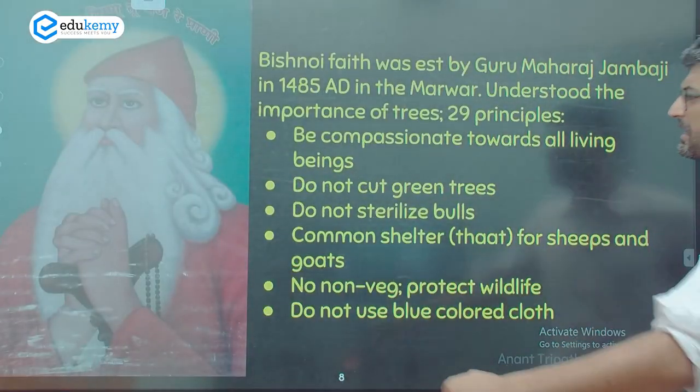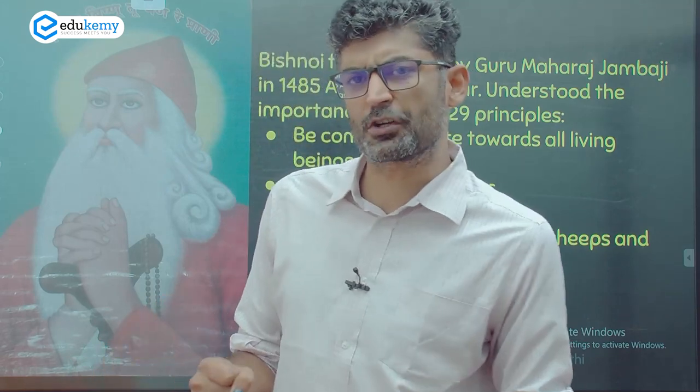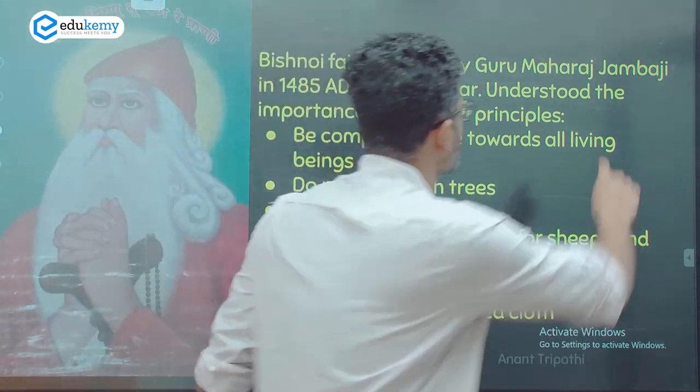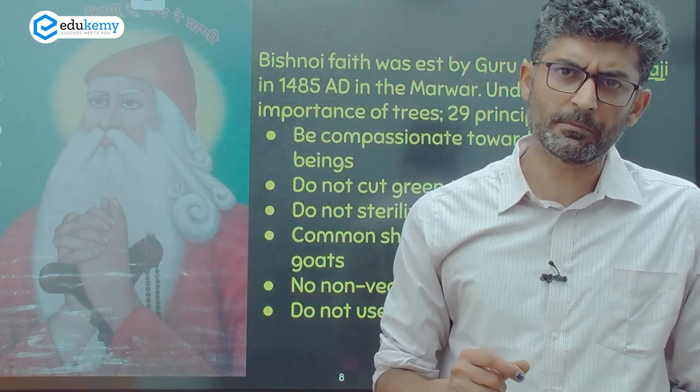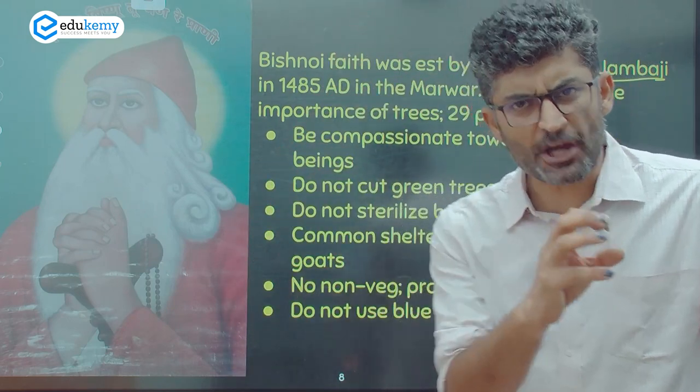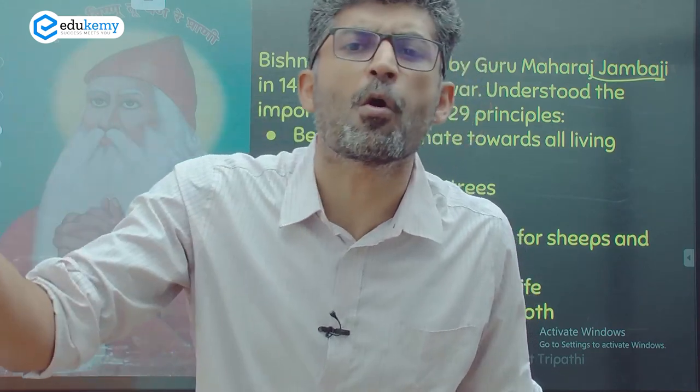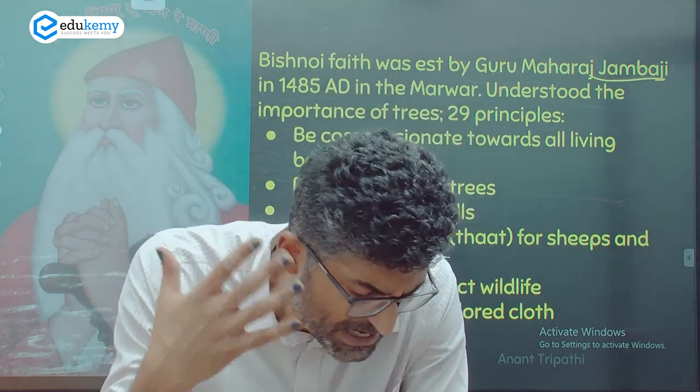As we keep moving, the next very intriguing personality is Guru Maharaj Jambaji, from the Marwar-Jodhpur region. Maharaj Jambaji came up with his own 29 precepts — the Bishnoi faith. He was a very sharp person who understood the connection between trees and the sustainability of human communities. Among his 29 precepts, some are immediately clear in what he was trying to achieve.